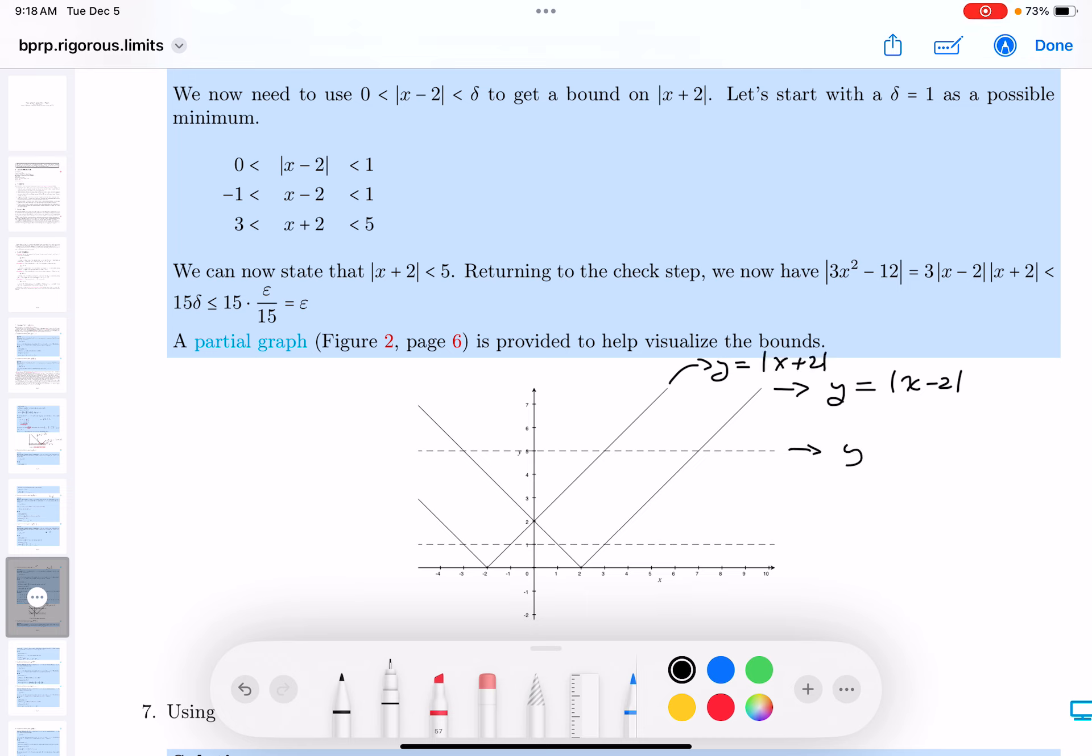And then I got this line over here, it looks like y equals 5. And this line over here, which is y equals, looks like 1.